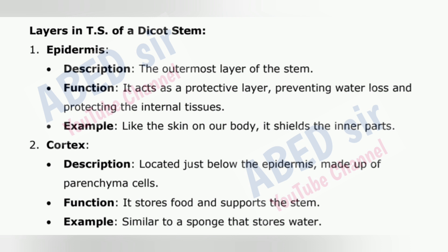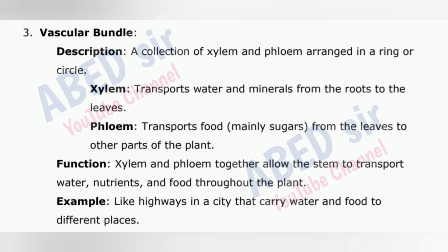2. Cortex — located just below the epidermis, made up of parenchyma cells. Function: it stores food and supports the stem. Example: similar to a sponge that stores water. 3. Vascular bundle — a collection of xylem and phloem arranged in a ring or circle. Xylem transports water and minerals from the roots to the leaves. Phloem transports food, mainly sugars, from the leaves to other parts of the plant. Together they allow the stem to transport water, nutrients, and food throughout the plant. Example: like highways in a city.